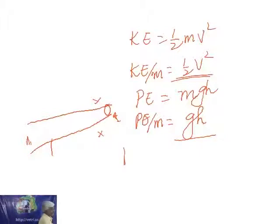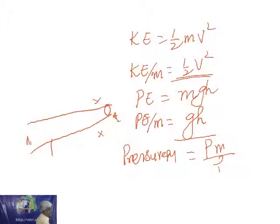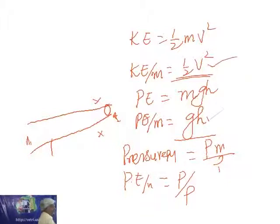What is the pressure energy? That is a new concept. Energy due to pressure exists because pressure is a force — force divided by area equals pressure. Pressure energy is P into M by rho, so pressure energy per unit mass is P by rho. So remember: half V squared, GH, and P by rho — this is total energy per unit mass.